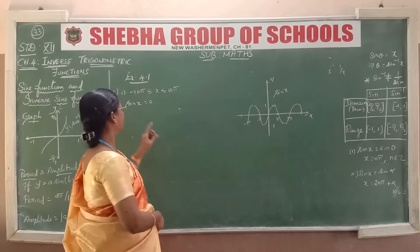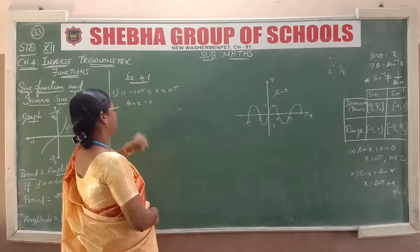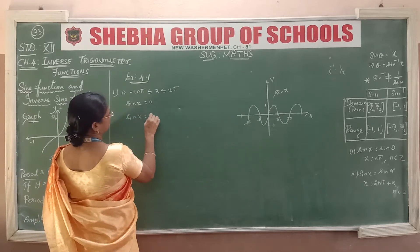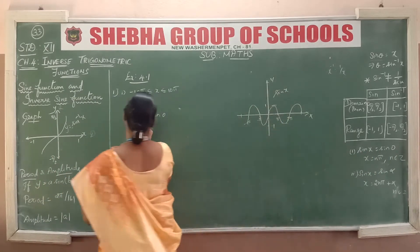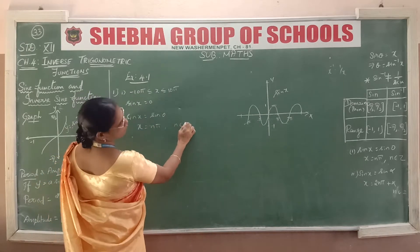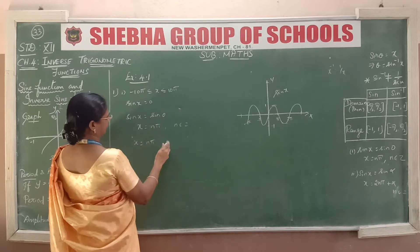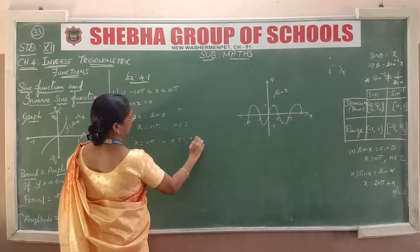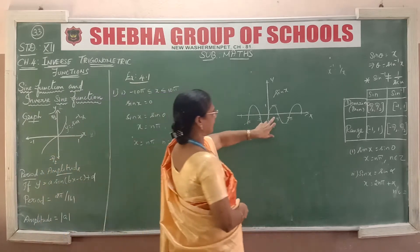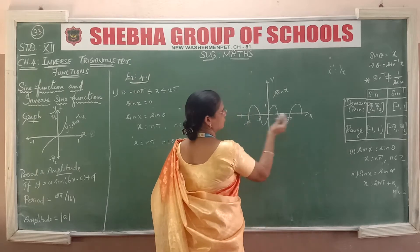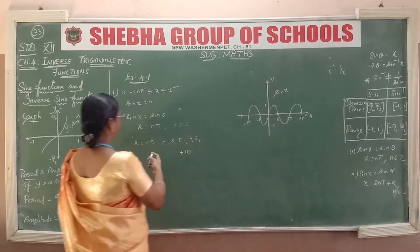Exercise 4.1. The first subdivision: -10π ≤ x ≤ 10π and sin x = 0. Since sin x = sin 0, we get x = nπ, where n belongs to integers. Here we have -10π to +10π, so n = 0, ±1, ±2, ... up to ±10. The values are 0, ±π, ±2π, ±3π, and so on. Using the formula, we substitute all valid values.